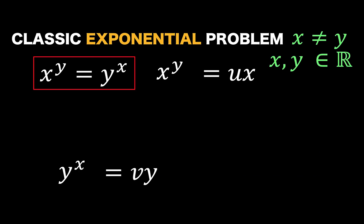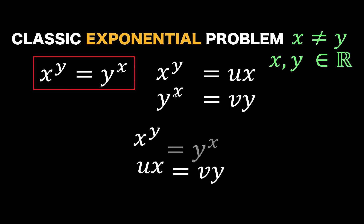and write that as certain constant v times y. And so we now have these two values for x raised to y, and y raised to x. Since two quantities that are equal to the same quantities are equal, then we can now form this equation.